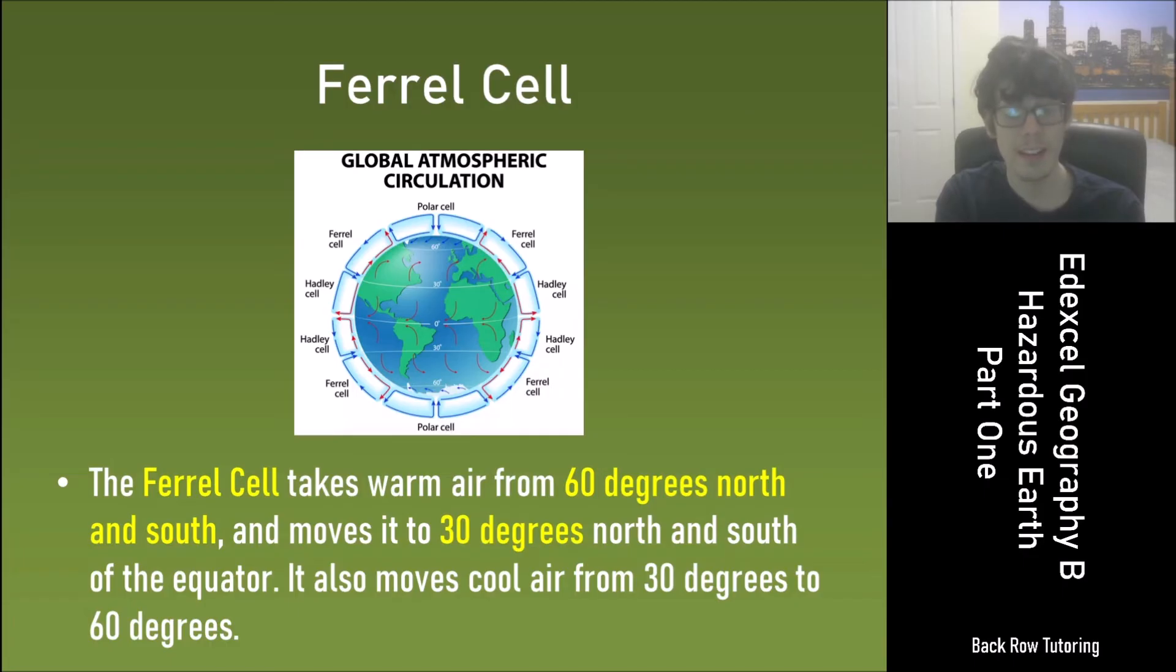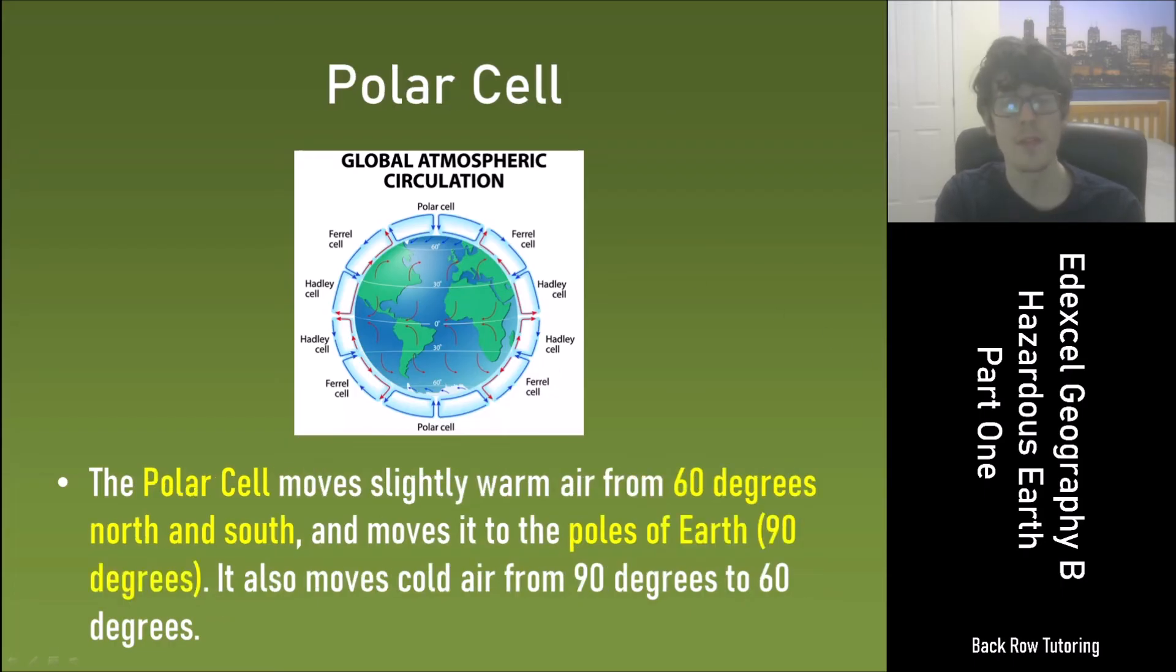The Ferrel cell takes warm air from 60 degrees north and south and moves it to 30 degrees north and south. It also moves cool air from 30 degrees to 60 degrees. The polar cell moves slightly warm air from 60 degrees north and south and moves it to the poles of the Earth. It also moves cold air from 90 degrees back to 60.